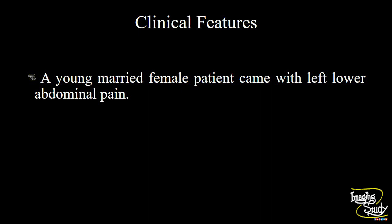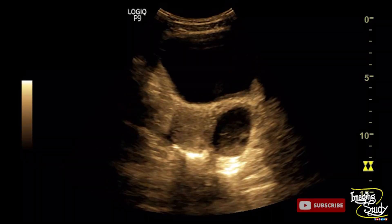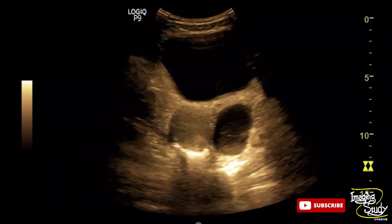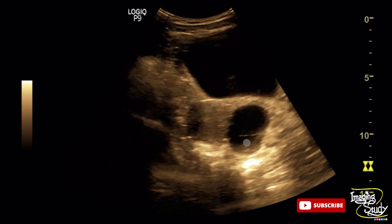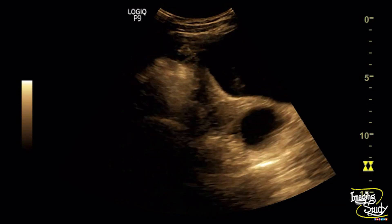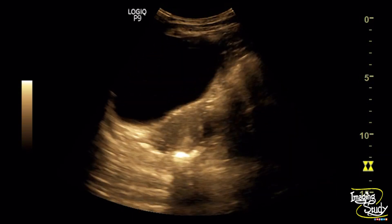A young married female patient came with left lower abdominal pain. On ultrasound, you can see a well-defined complex cystic structure with internal solid components and reticular pattern noted at the left adnexal region.